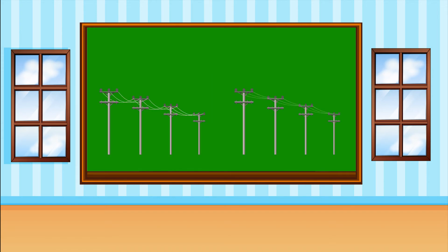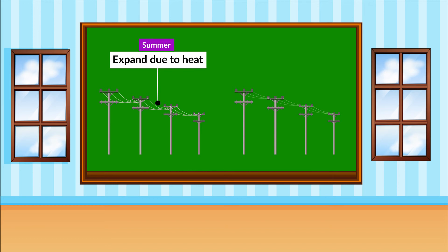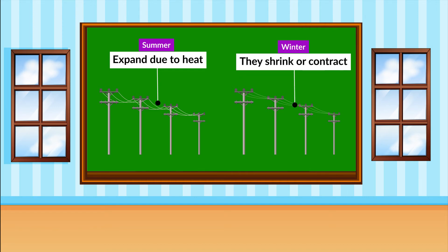Here is an example: have you observed the electrical cables between the poles? These cables expand on heating in summers and can be seen loosely hanging below. But in winters, they contract and get tight because of contraction.